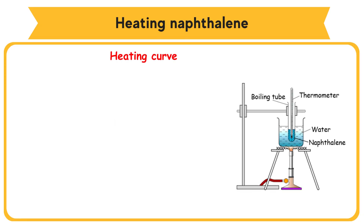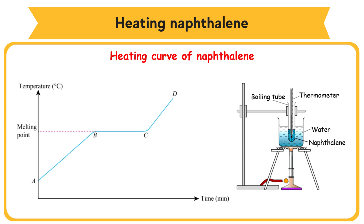Heating curve of naphthalene. At point A, naphthalene exists as a solid. When the solid is heated, energy is absorbed. This causes the particles to gain kinetic energy and vibrate more rapidly. The temperature increases from point A to point B. At point B, solid naphthalene starts to melt. During the melting process, the temperature of naphthalene does not increase even though heating is continuing. The temperature remains constant because the heat energy absorbed by the particles is used to overcome the attractive forces between particles.